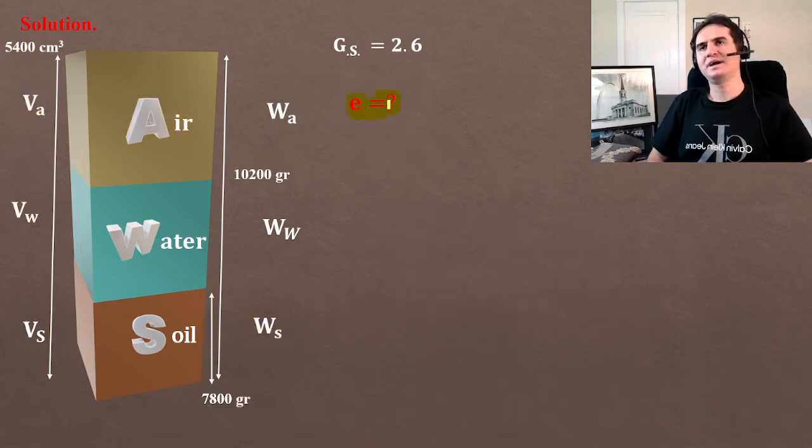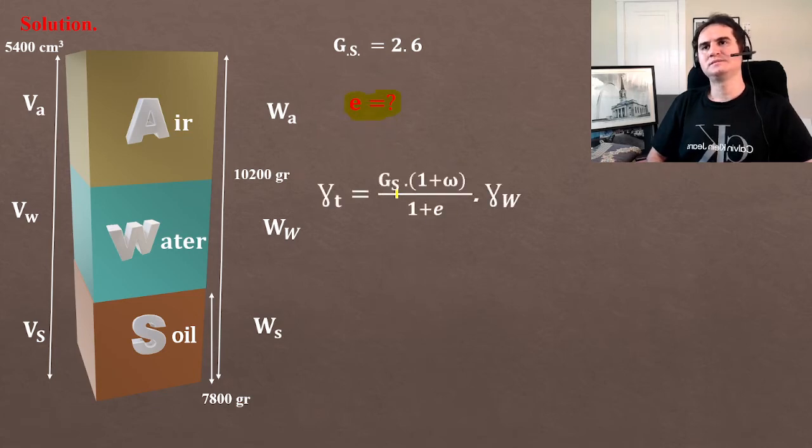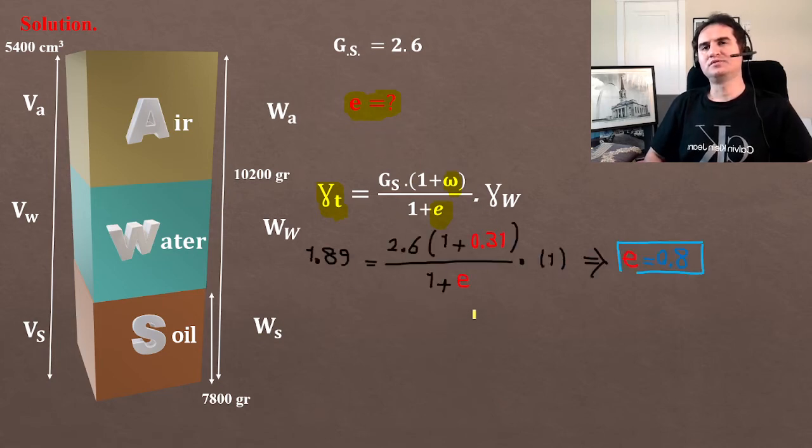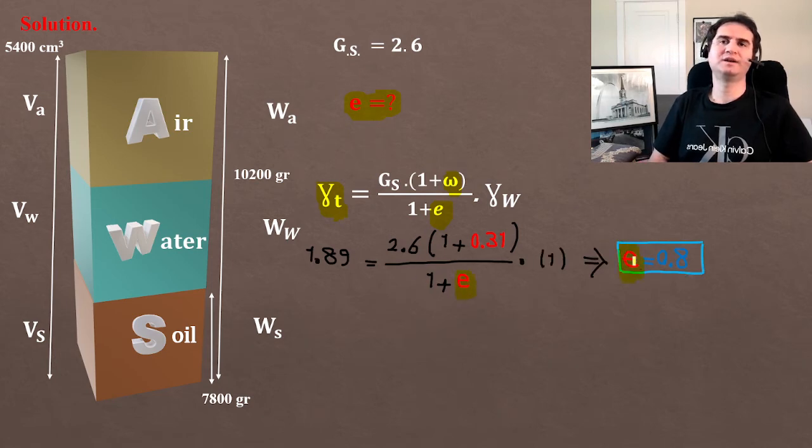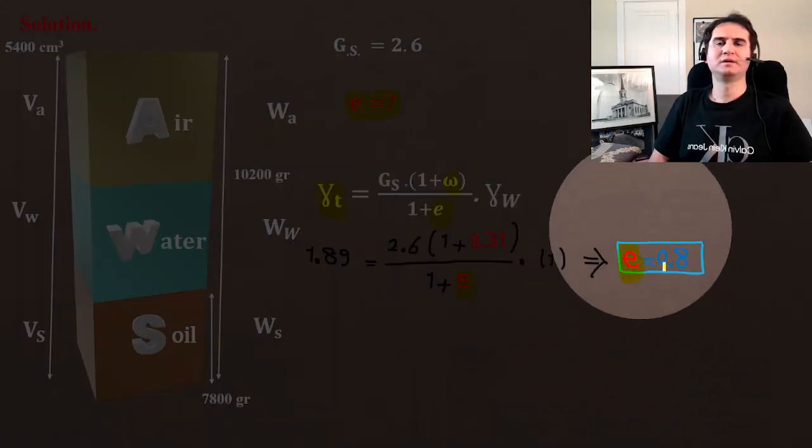To calculate void ratio, if you write down the main equation for gamma T, that's Gs times 1 plus moisture content over 1 plus void ratio times unit weight of water. The only unknown here is e, because Gs is 2.6, water content is 31%, and gamma W and gamma T are already calculated. If you replace that in the equation, it gives you a void ratio of 0.8.